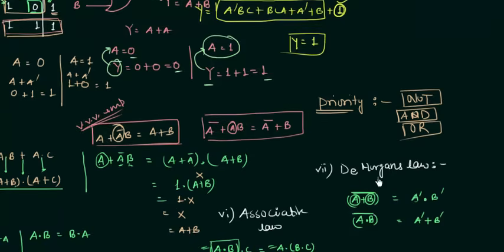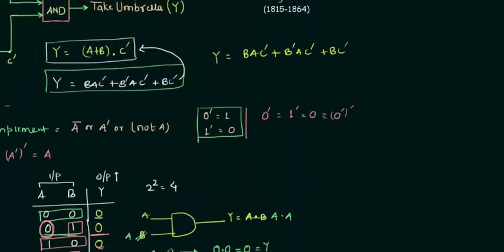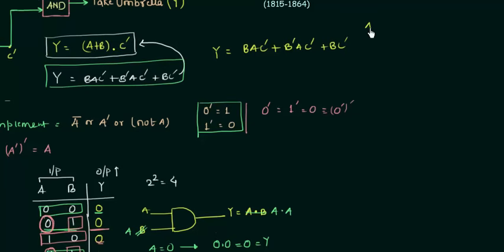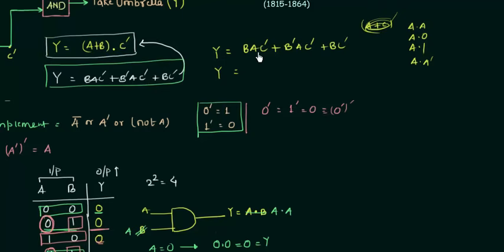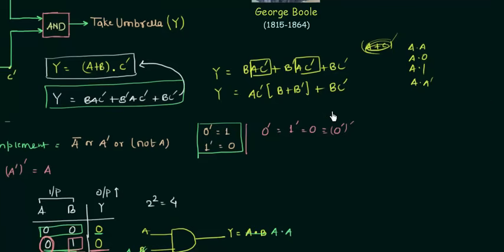We solve the complement using De Morgan's law, but here we only have complements of individual variables, so nothing to simplify further. Next we check for AND operation patterns (a AND a, a AND 0, a AND 1, a AND a') — none apply. Moving to OR, we notice that ac' is common in the first two terms, so we factor it out: ac'(b OR b') OR bc'. Since b OR b' = 1, this becomes ac'·1 OR bc'.